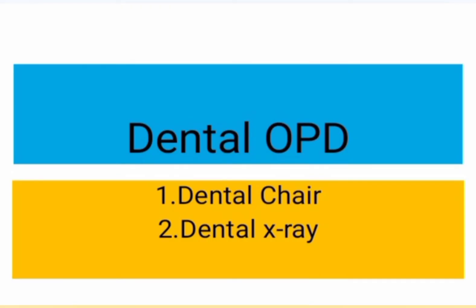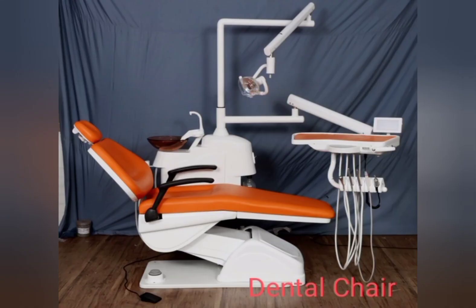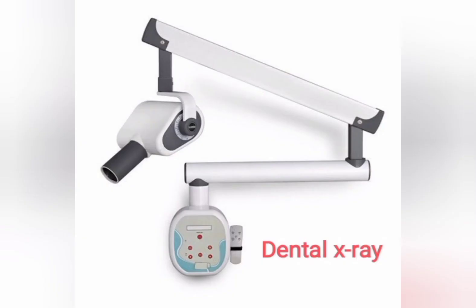Next is Dental OPD. This OPD sees patients who are suffering from dental problems. For proper checkup and treatment of oral — that is, dental problems — this OPD must contain a Dental Chair and Dental X-ray. These equipments are must-have and compulsory, meaning without them the OPD cannot run. Along with general equipments, these must-have equipments complete the OPD in its best way.